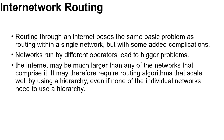One operator may not want another operator to even know the details of the path in its network, perhaps because the weights and paths may reflect sensitive information that represents a competitive business advantage. The internet may be much larger than any of the networks that comprise it, and may therefore require routing algorithms that scale well by using a hierarchy, even if none of the individual networks need to use a hierarchy.